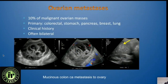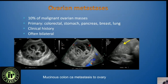An important mimic: this patient had bilateral ovarian lesions that looked like mucinous tumors, but this was actually metastatic mucinous colon cancer. Ovarian metastases represent about 10 percent of malignant ovarian masses. The most common primary tumors are colorectal, stomach, pancreas, breast, and lung cancer. Clinical history is key — this patient not only had bilateral ovarian lesions but also an echogenic mass in the liver.